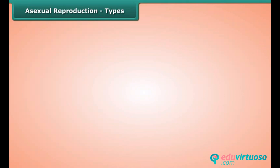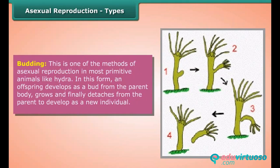Budding is one of the methods of asexual reproduction found in most primitive animals like hydra. In this form, an offspring develops as a bud from the parent body, grows, and finally detaches from the parent to develop as a new individual.